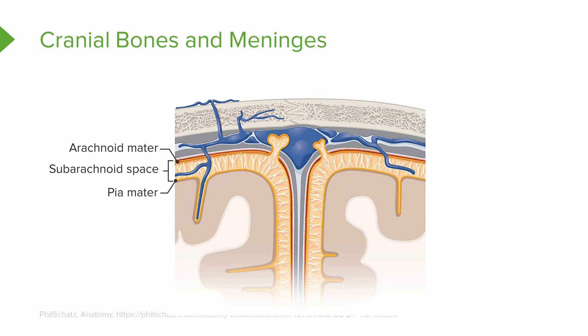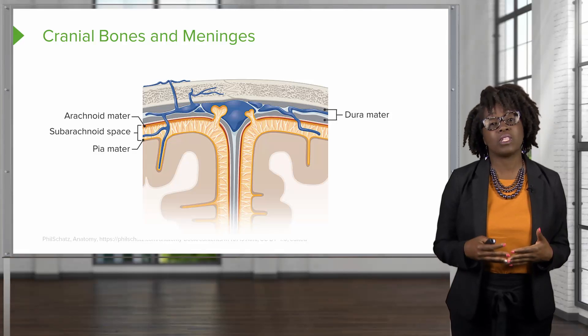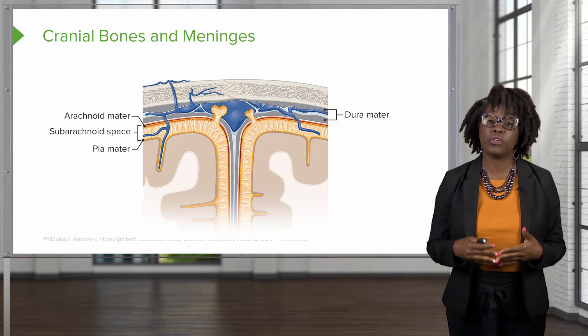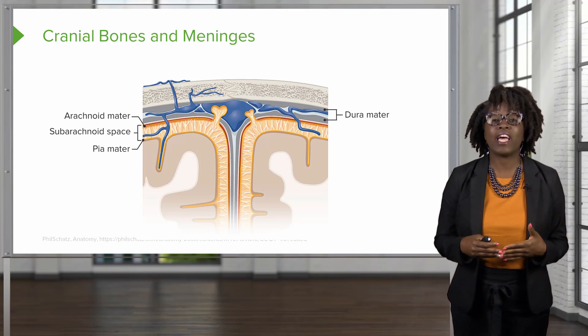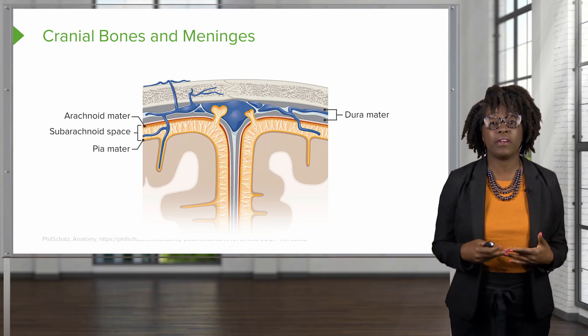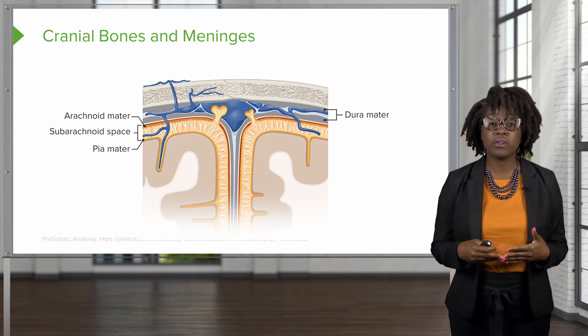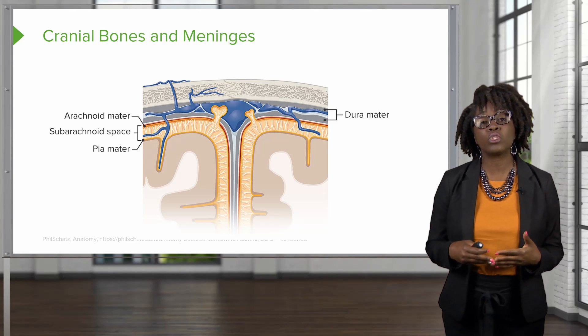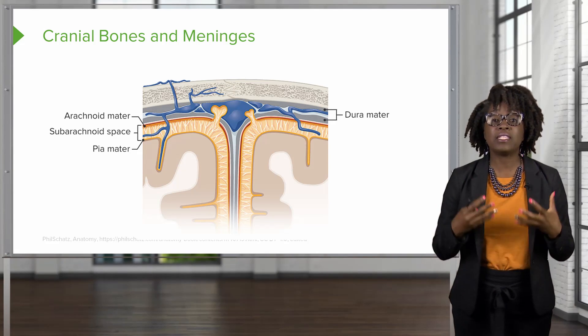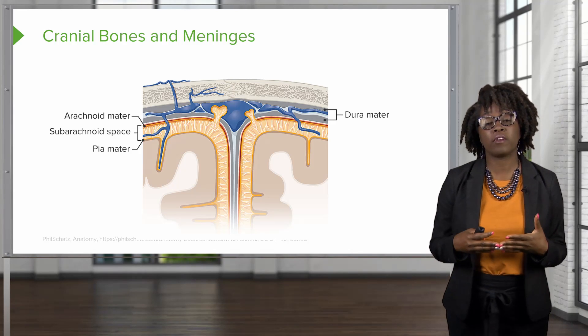Deep to the subarachnoid space and to the arachnoid mater, and continuous with the lining of the actual cerebrum, we have the pia mater. The outermost layer of our cranial meninges is the dura mater. Unlike the spinal cord, which only has one layer, the dura mater has two layers. These two layers are mostly fused together except where they separate to enclose the venous sinuses of the dural part of the brain.